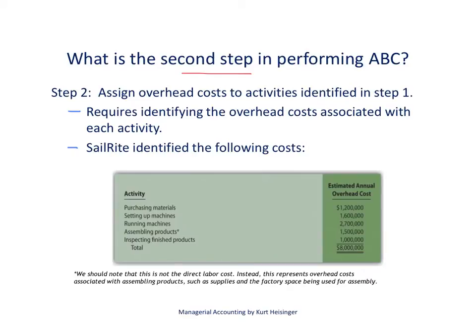The second step in performing activity-based costing is to assign overhead costs to those significant activities identified in step one. This requires identifying the costs associated with each activity and attaching those costs to the activity. For Sailrite, $1.2 million dollars in overhead costs relates to purchasing materials, $1.6 million dollars relates to setting up machines, and so on down the line — with the total still equaling $8 million dollars, now broken out into five different activities.